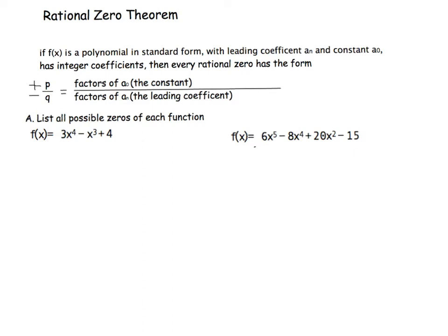What if we don't know any of the zeros? Our rational zero theorem, or rational root theorem, tells us that if we have a polynomial in standard form, the leading coefficient is a_n and the constant is a₀. The leading coefficient is the term in front of the highest exponent. In this case the leading coefficient is 3 and the constant is 4. In this other case, the leading coefficient is 6 and the constant is negative 15.